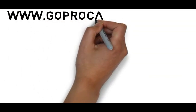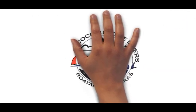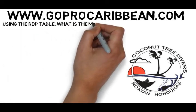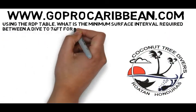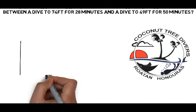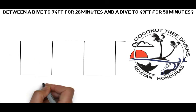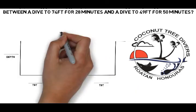We are going to look at a question where we have to find a minimum surface interval using the RDP table — another common type of question you could get in a PADI exam. The question is: what is the minimum surface interval required between a dive to 74 feet for 28 minutes and a dive to 49 feet for 50 minutes? As always, lay out a diagram and put the information from the question into it.